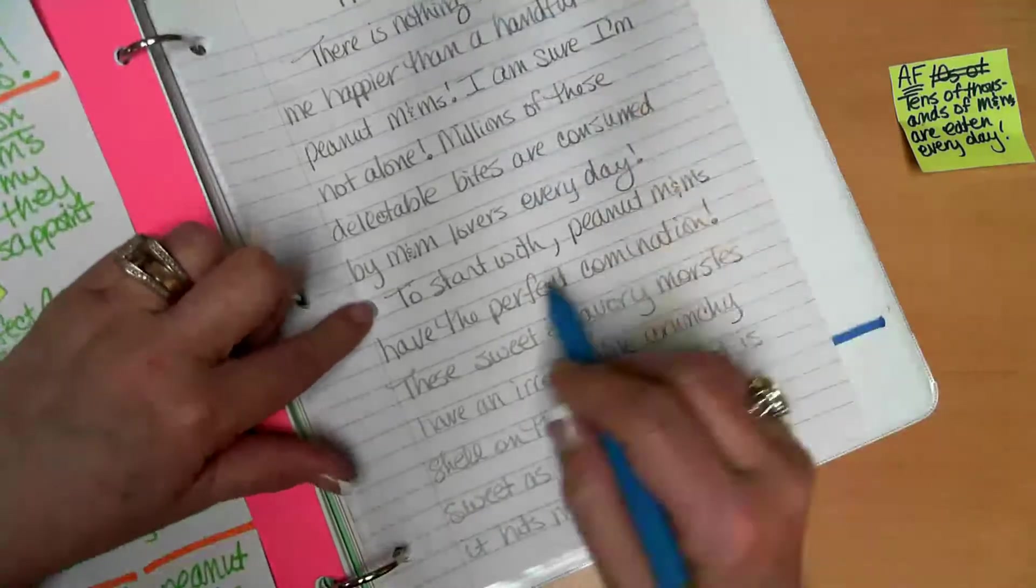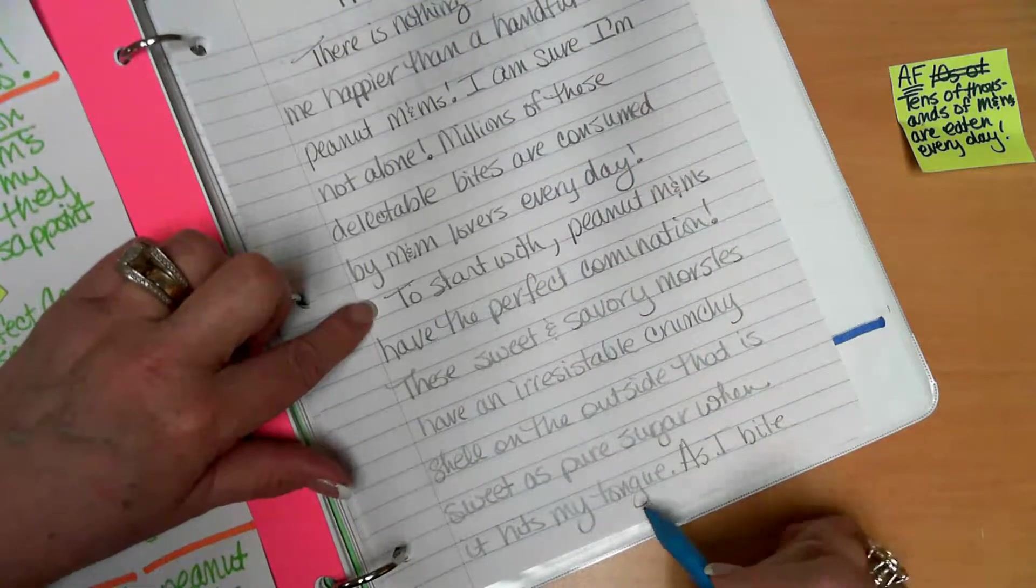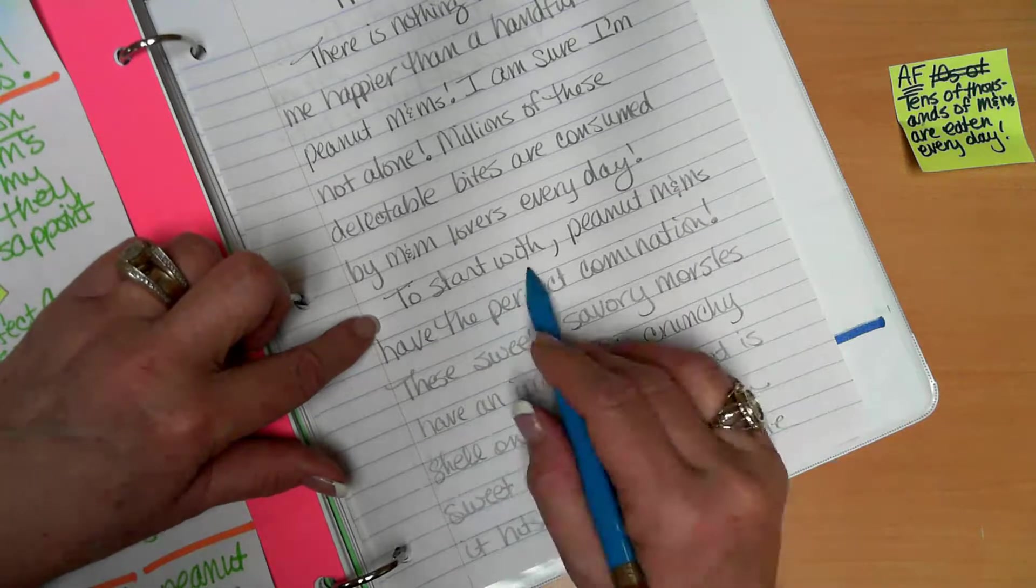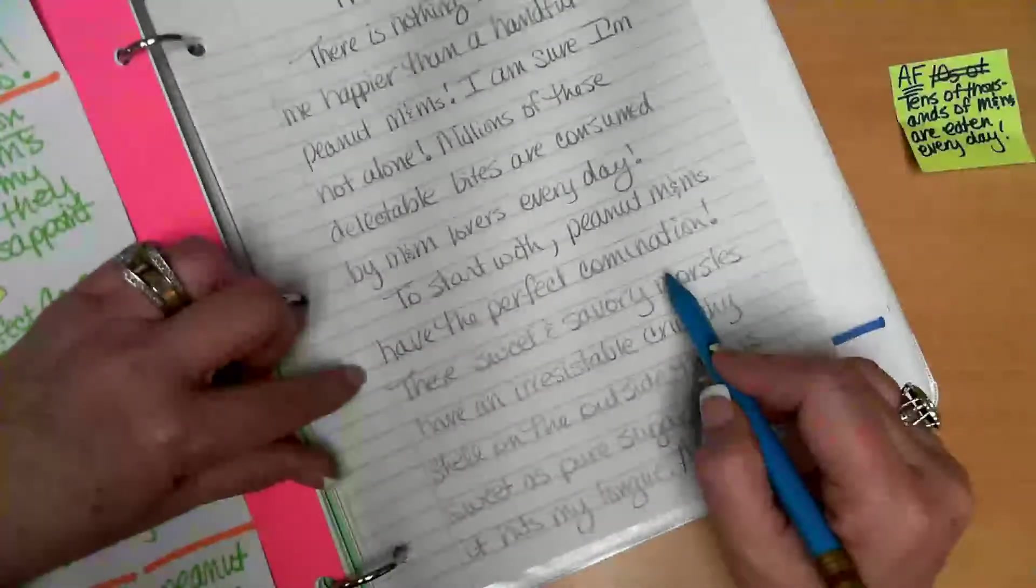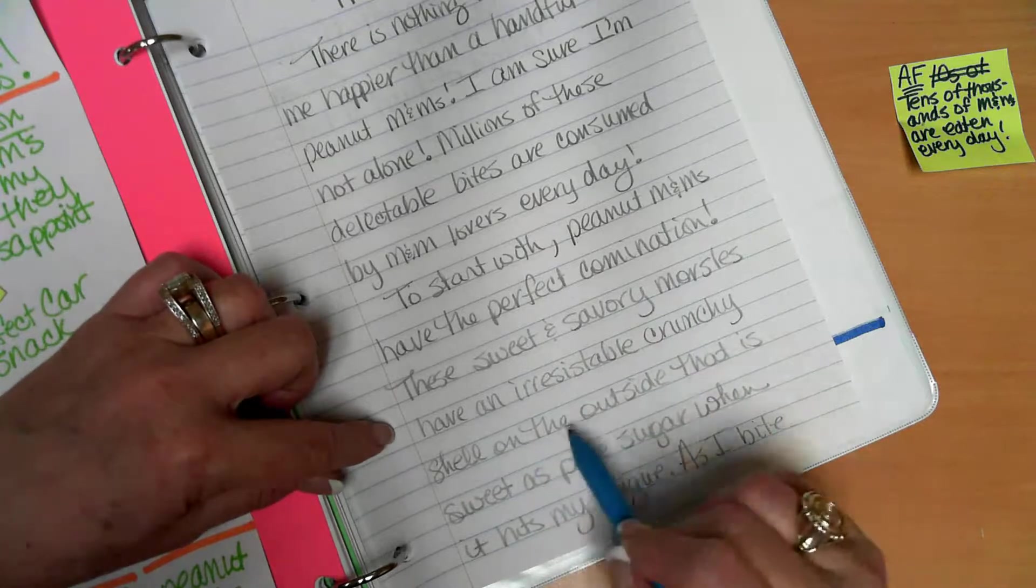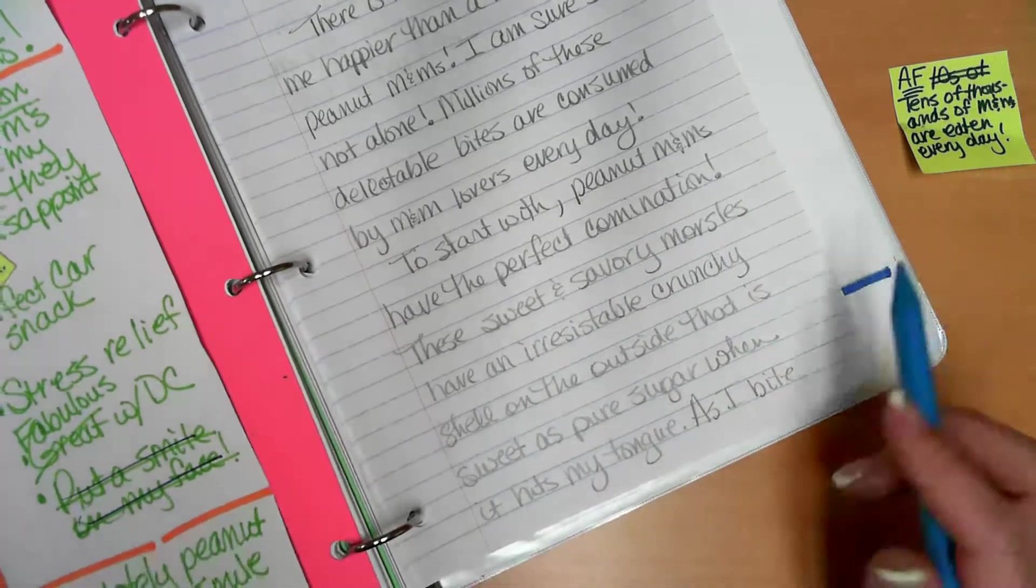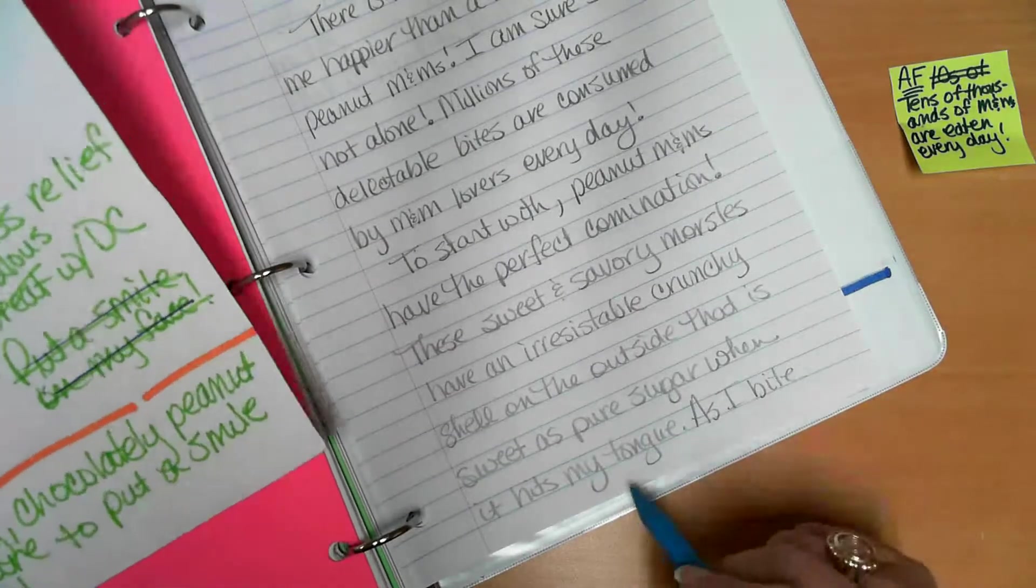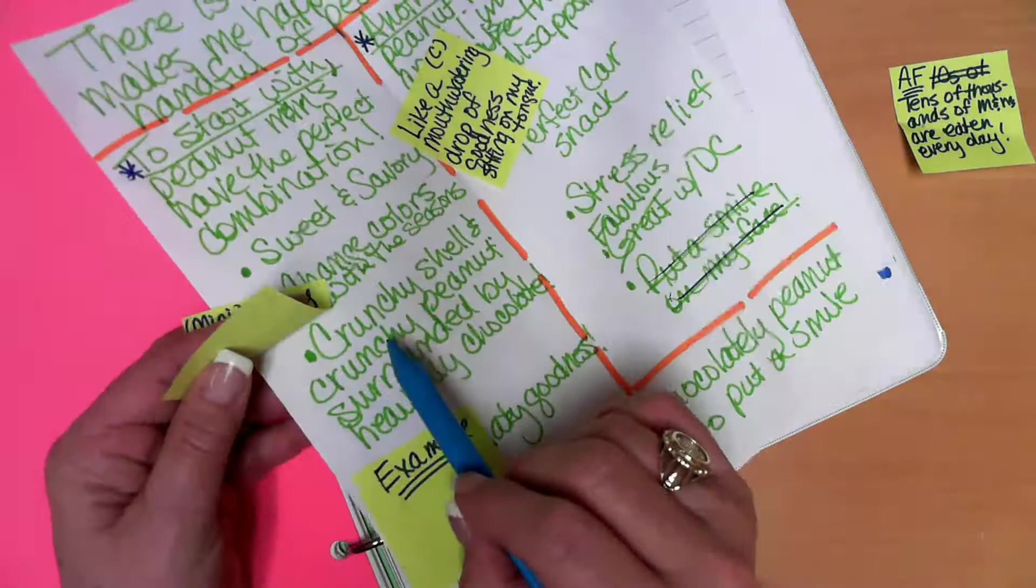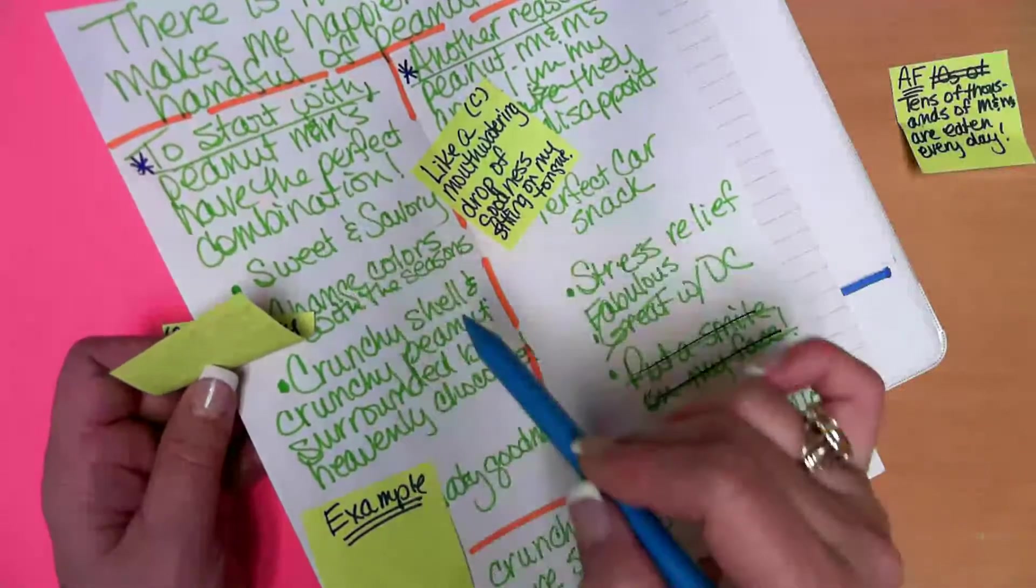Okay, because I'm following the golden rule of writing, I am thinking, then I'm writing, then I'm rereading it. So I'm going to go back and I'm going to read. I'm not going to reread my introduction because I'm just going to read what I've written to the point where I stopped, from the point that I stopped the video. So now, to start with, peanut M&Ms have the perfect combination. These sweet and savory morsels have an irresistible crunchy shell on the outside that is sweet as pure sugar when it hits my tongue.